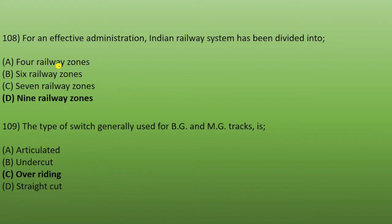Next: for effective administration, the Indian railway system has been divided into how many zones? It is divided into 9 railway zones. If you don't know which zones, you can Google it or tell me in the comments.